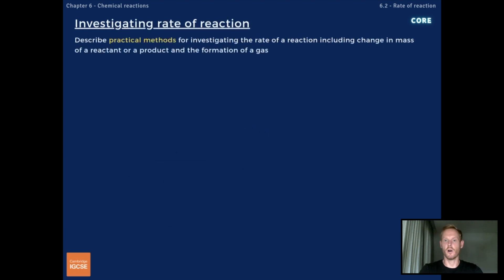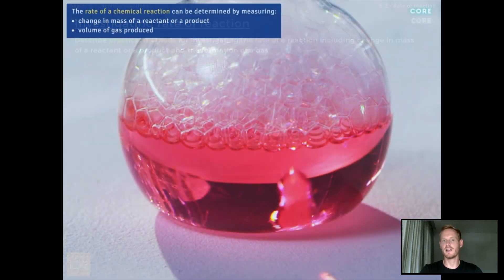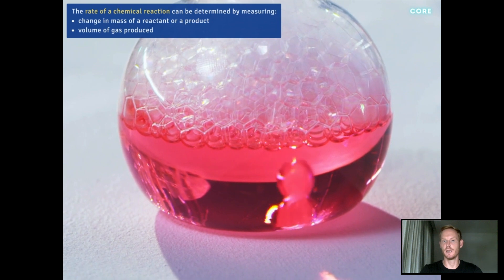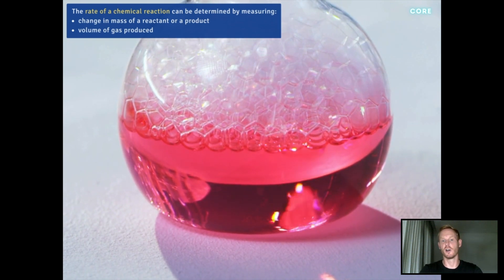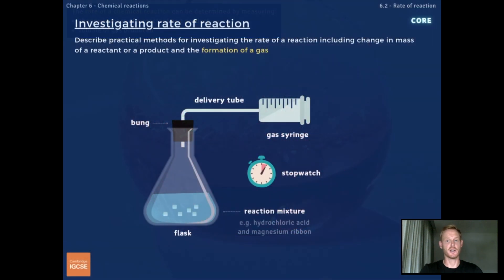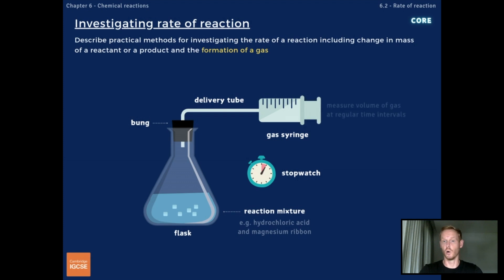Next, you need to describe practical methods for investigating rates of reaction. The rate of a chemical reaction can be determined by measuring the change in mass of a reactant or product, or the volume of gas produced. To measure the volume of gas produced, attach a gas syringe to a sealed flask containing the reactants and immediately start the stopwatch. Record the volume of gas in the syringe at regular time intervals, for example every 30 seconds, and when the reaction is over, plot your results on a graph.